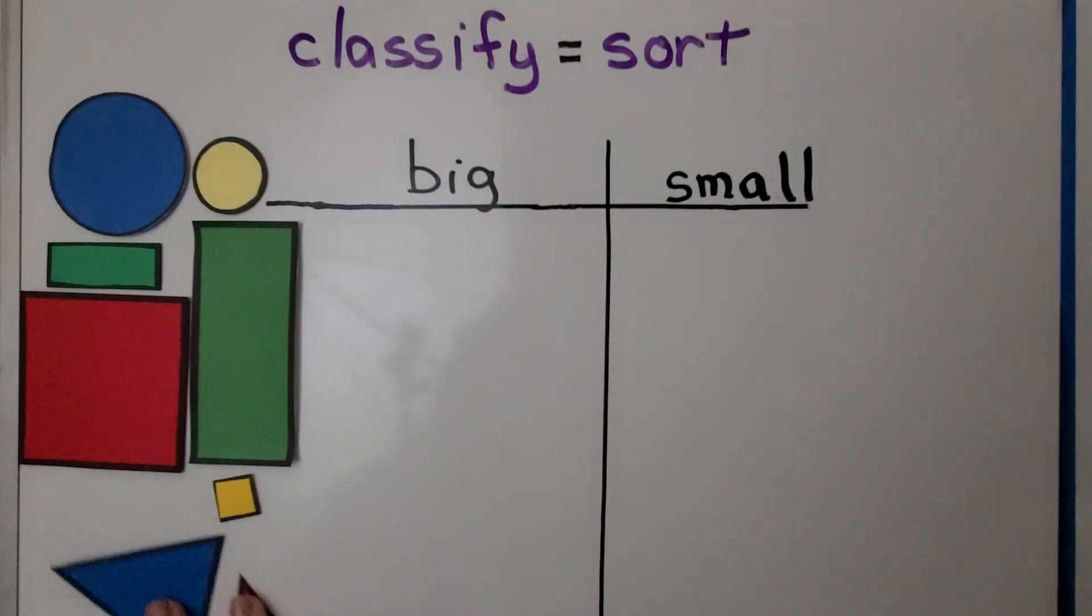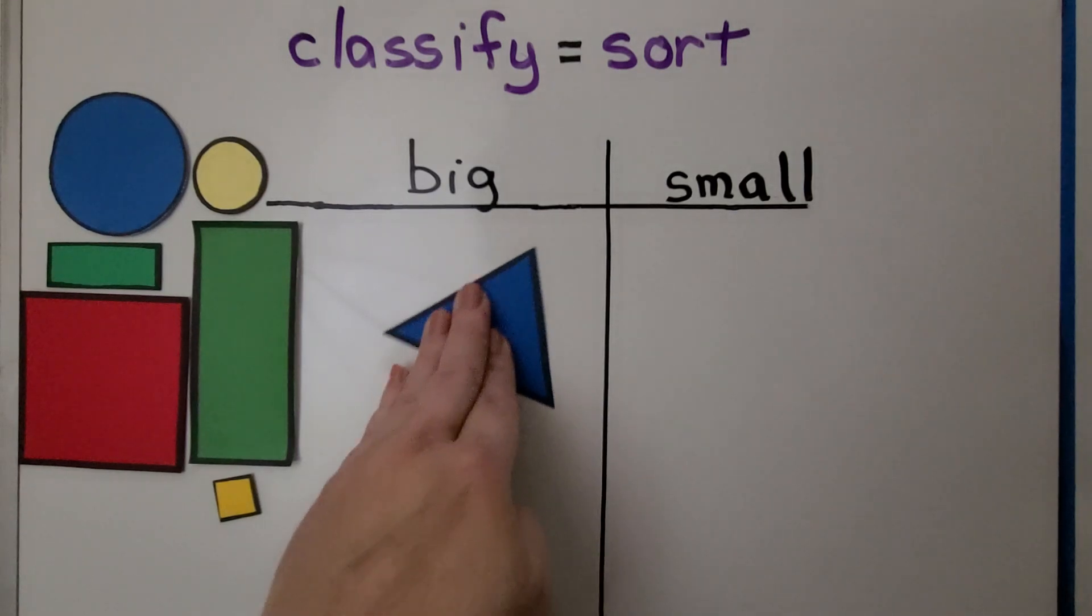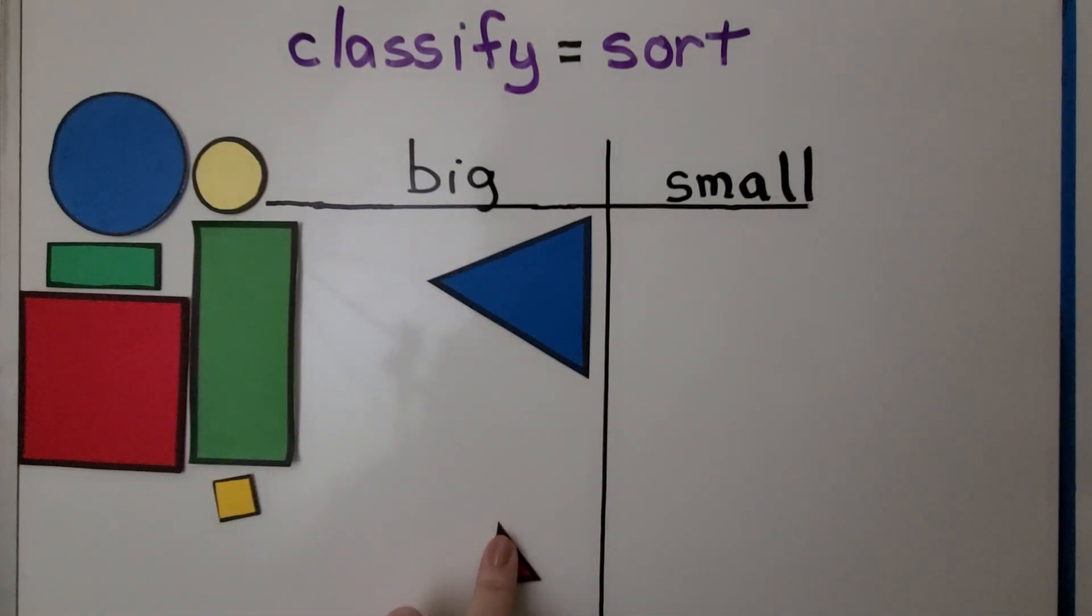Here we have two triangles. Which side do you think they should go on? If you said this goes on the big side you're right, that's a big triangle and this is a small triangle.